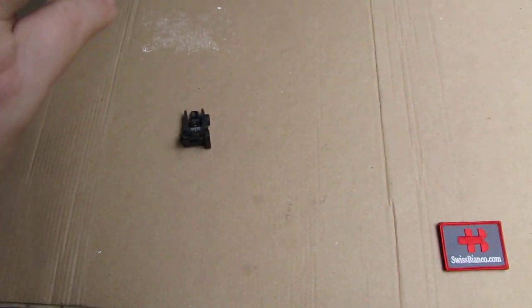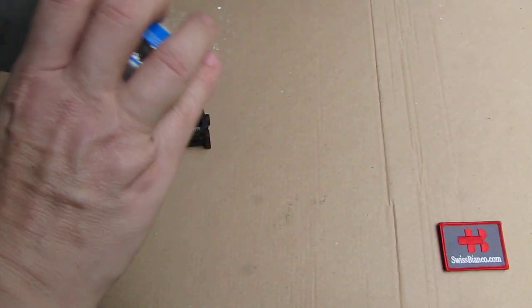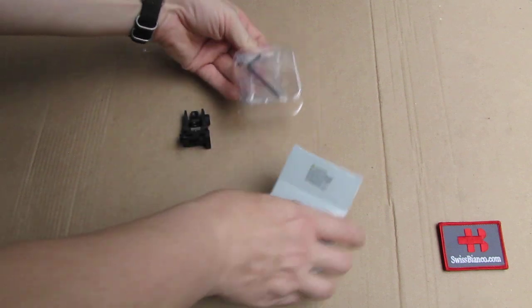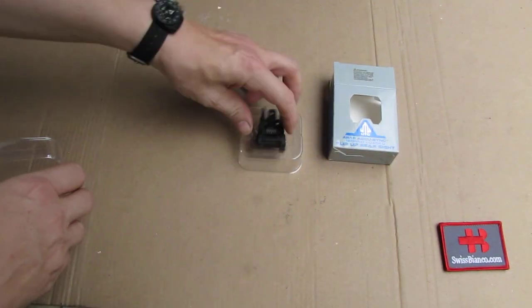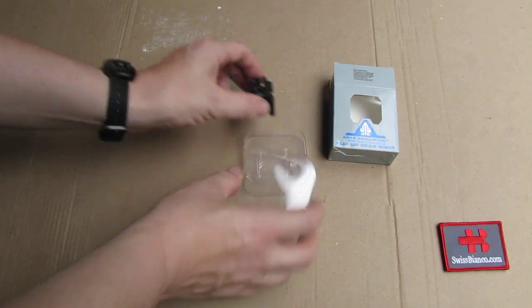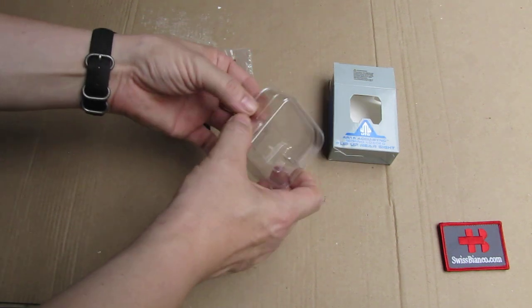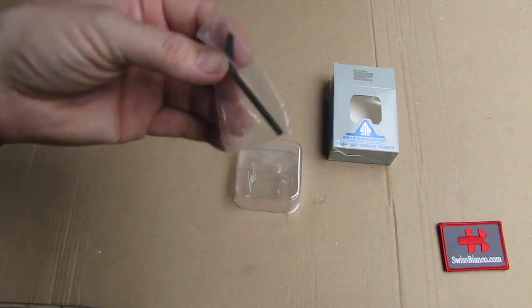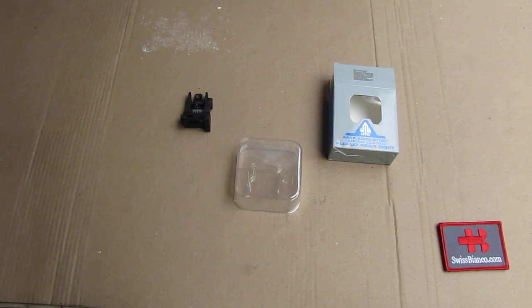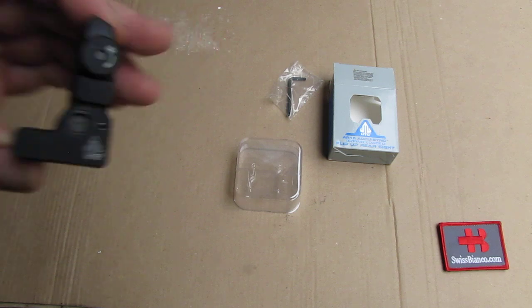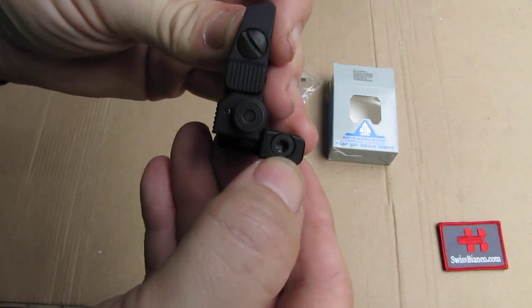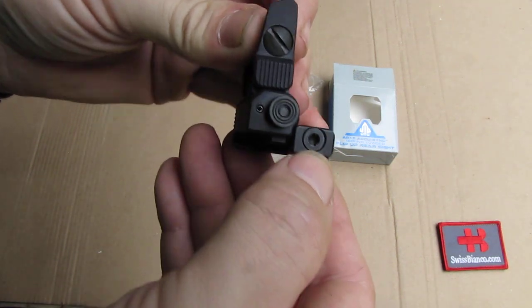As we look in the box, we have that typical inlay where the sight is in it, well protected. Nice part, and it of course comes with a Torx wrench to mount it on your pic rail.